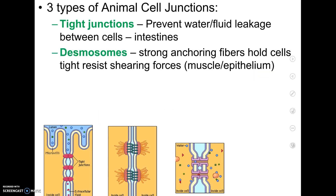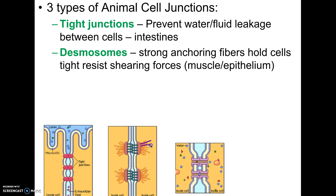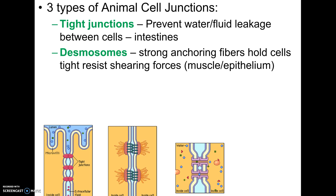The second one is called desmosomes. Desmosomes are for areas of stress. Notice in the picture they have spikes holding the two cells together. This is sort of like putting screws to build a table — you really want to hold it together because you might shake or move it. This would be for areas where there's force: specifically your skin, your muscles, your heart. These are areas constantly subjected to stress, and you want those cells held together really well.